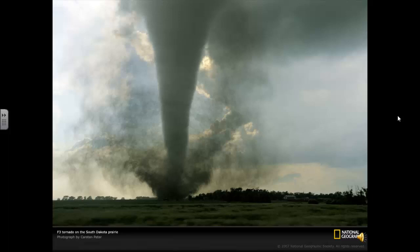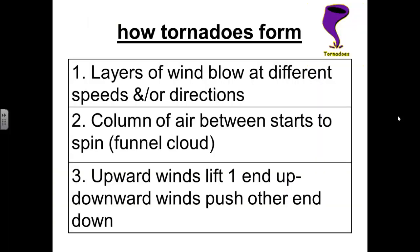Next, we are going to talk about tornadoes. Many things happen as a tornado forms. Layers of wind in a storm blow at different speeds or in different directions. Between these layers, a column of air starts spinning like a log rolling on its side. Then, upward winds lift one end of this spinning column, and downward winds push down on the other end. This spinning column of air is called a funnel cloud. It is called a tornado if it touches the ground. Tornadoes usually last only a few minutes, but they can leave a path many kilometers long and hundreds of meters wide. Winds in a tornado move at hundreds of kilometers per hour and can move cars and buildings around with ease.